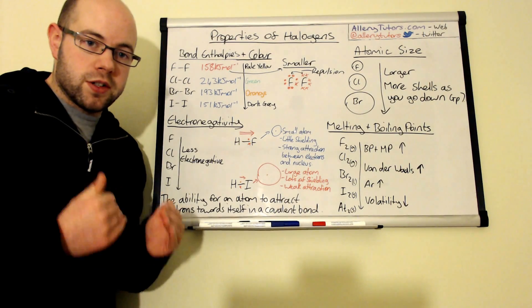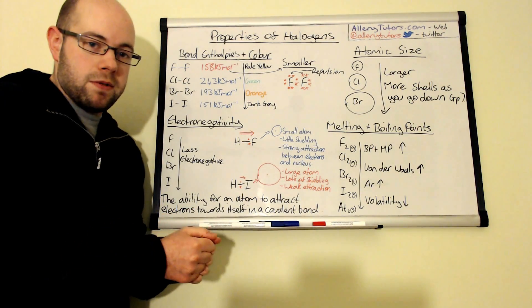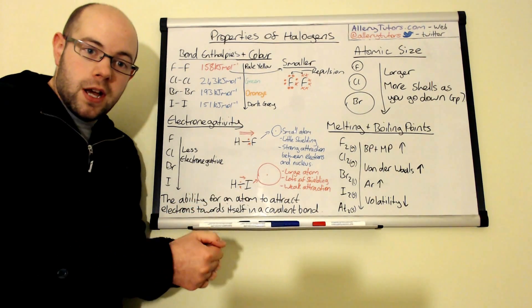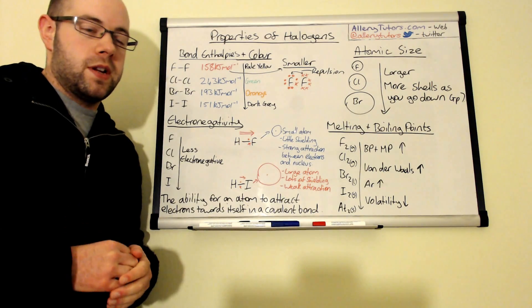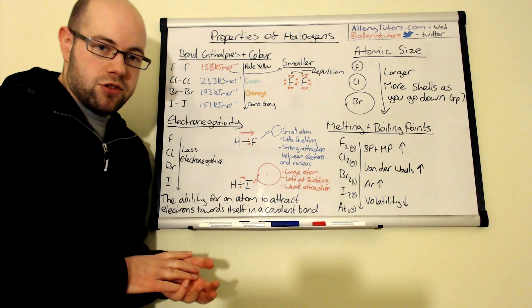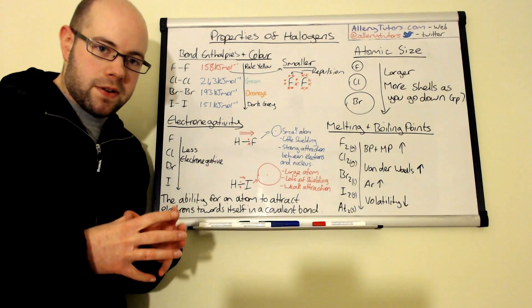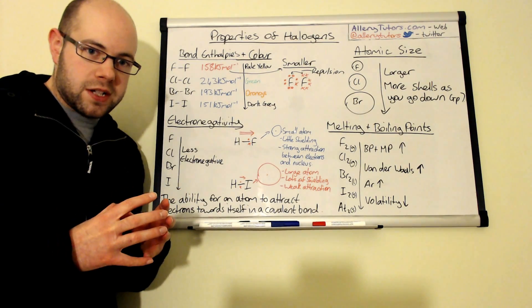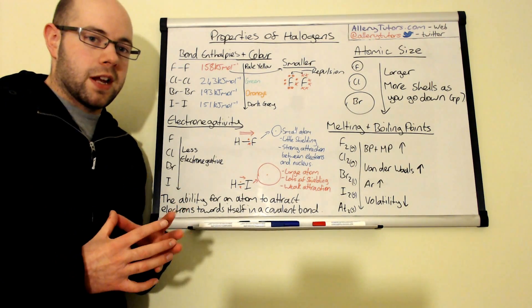So because that attraction is really strong you get a very strong, the electrons are pulled closer towards the fluorine than towards the hydrogen so that makes fluorine very electronegative mainly because the small size of the atom and the very little shielding that it has.